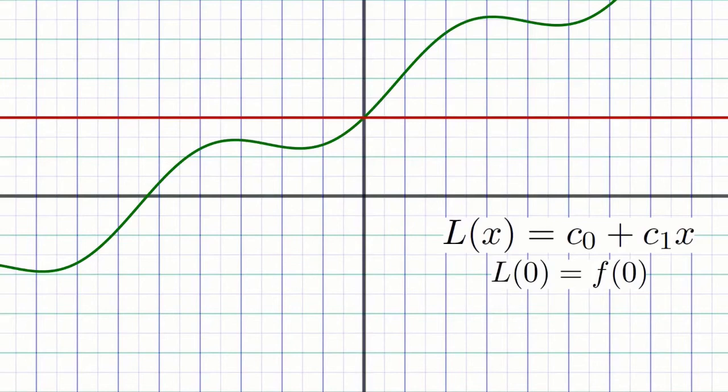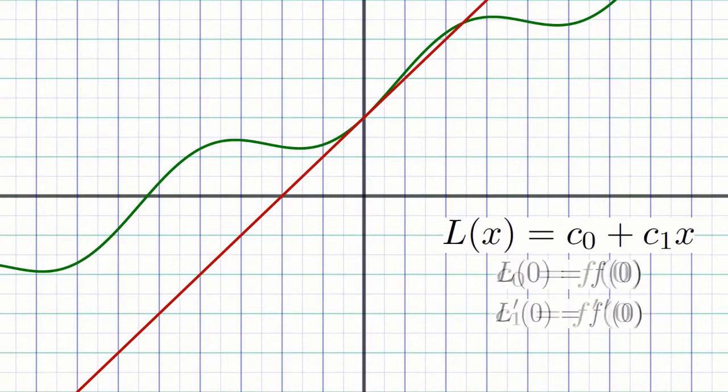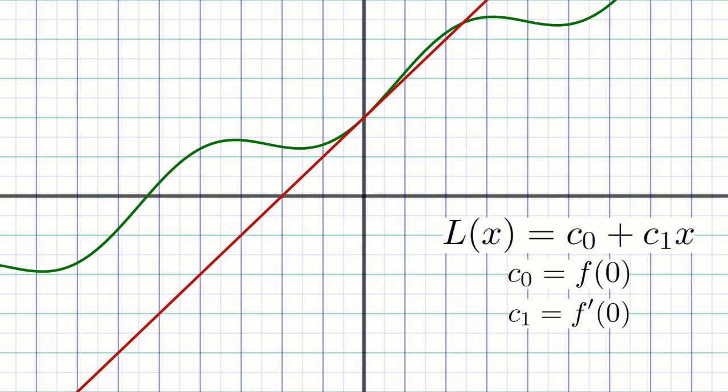l of 0 equals f of 0. But we also want the derivative of the tangent line to equal the derivative of the target function at x equals 0. So l prime of 0 equals f prime of 0. Writing out the expressions for l of 0 and l prime of 0 more explicitly, we find the coefficients c0 and c1 must be f of 0 and f prime of 0, respectively.